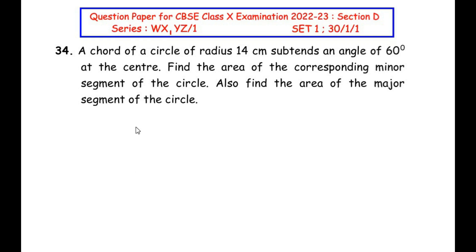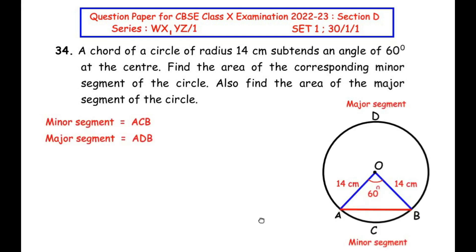Hello and welcome to my channel. In this video we are going to solve the 34th question from CBSE Class 10 examination 2022-23, Section D, where each question is of five marks. This question is from the 'Areas Related to Circles' chapter. A chord of a circle of radius 14 centimeters subtends an angle of 60 degrees at the center. To understand this question, let us draw a rough figure first.